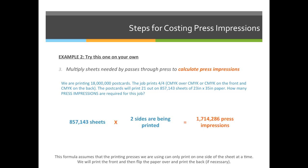The formula for calculating the total number of press impressions for this job would be the total number of sheets — which is 857,143 — multiplied by 2, because we're printing on the front and the back of the sheet of paper. The correct answer is 1,714,286.